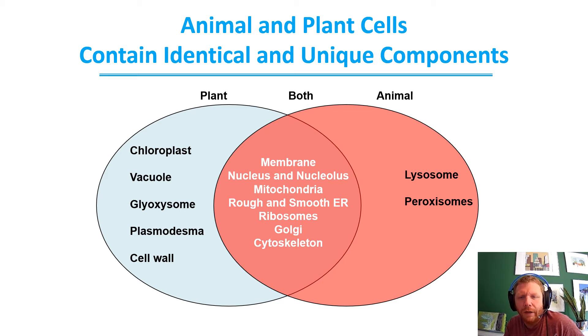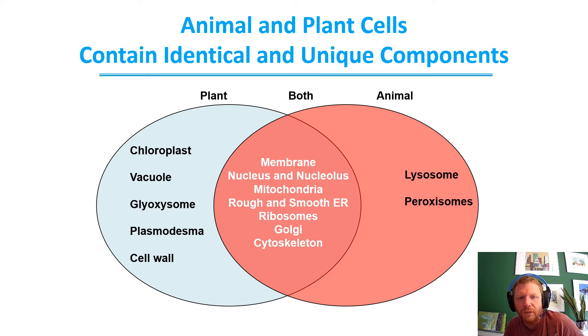How about that Venn diagram — what I was talking about a little bit ago. Here are our differences: chloroplast, vacuole, glyoxosome, plasmadesma, and cell wall.